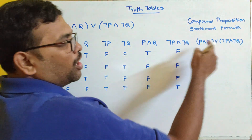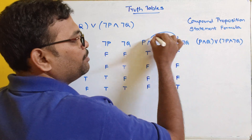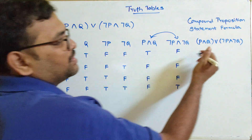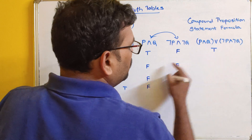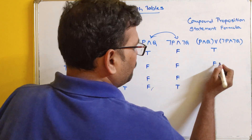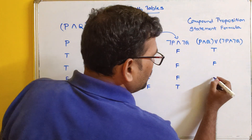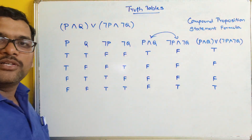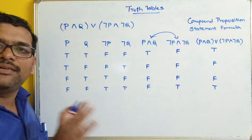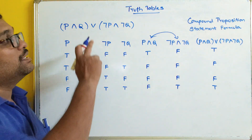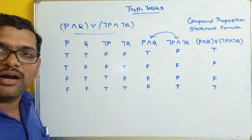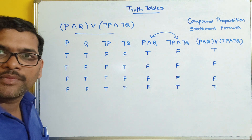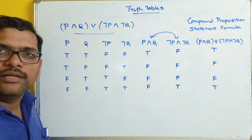Now we perform the OR operation between P ∧ Q and ¬P ∧ ¬Q to get the final result. T ∨ F = T, F ∨ F = F, F ∨ F = F, F ∨ T = T. So this is the truth table for this particular compound proposition.